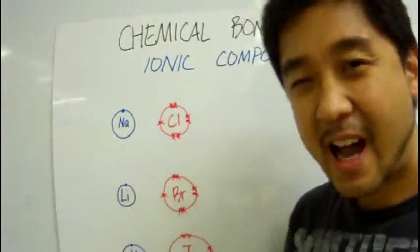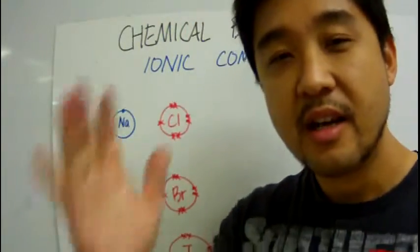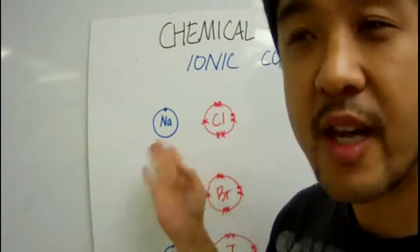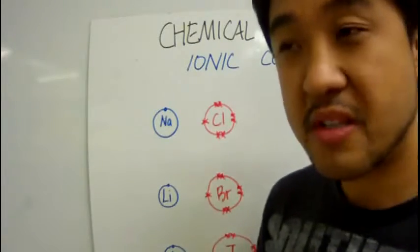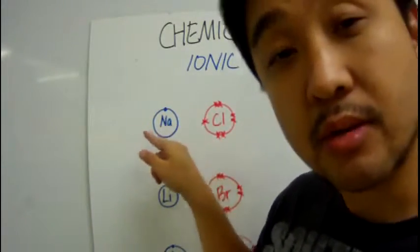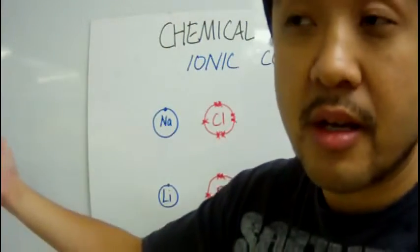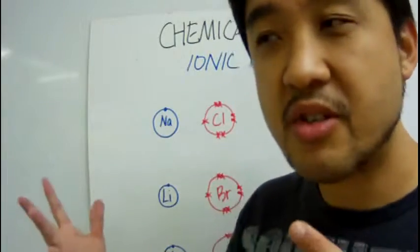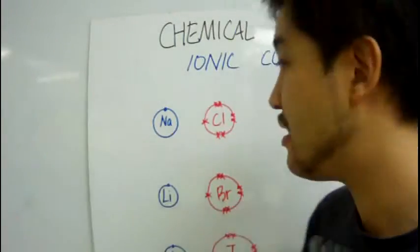We're going to talk about ionic compounds today and begin with a very simple example. There we have the valence shell structure of sodium and chlorine. A valence shell structure is simply drawing the elements showing only the valence shell and the electrons on those valence shells. There are inner shells and inner electrons, but chemistry is really about the interactions and behaviors of those valence electrons.